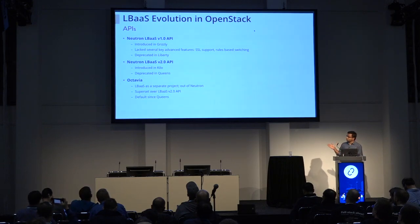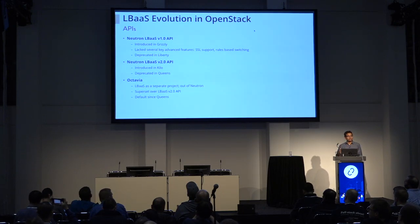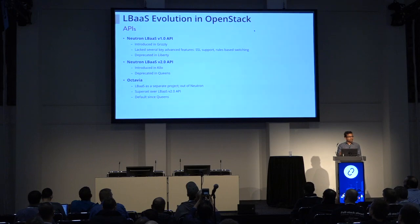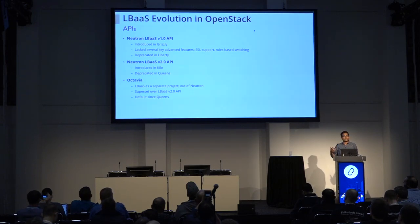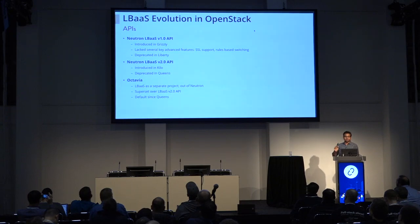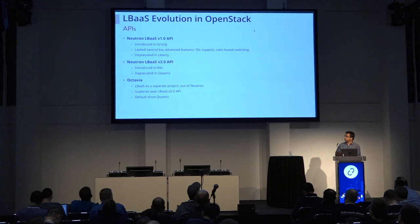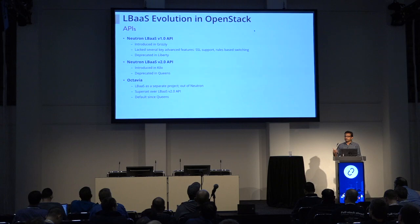Octavia is the newest project that moved out of Neutron, so LBaaS is no longer served under the Neutron APIs and has its own separate API endpoint. Octavia is backwards compatible to LBaaS version two APIs, is a superset over LBaaS V2, and has been adding more features.